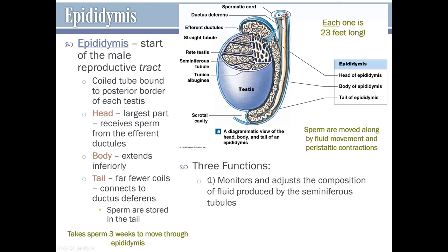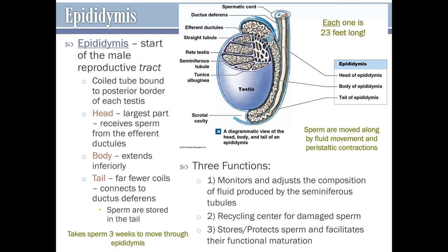The epididymis has three functions. First, it monitors and adjusts the composition of the fluid produced by the seminiferous tubules, which makes up part of the fluid component of semen. Second, it acts as a recycling center for damaged sperm — as sperm move through, they can be scanned for abnormalities, and if damaged or abnormal they can be reabsorbed, broken down, and the parts reused to make new sperm. Third, it stores and protects sperm and facilitates their functional maturation.